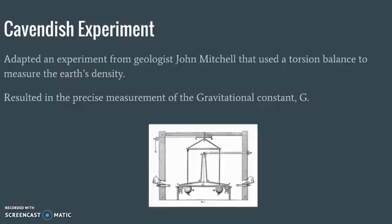Mitchell had been designing a torsion balance to measure the Earth's density. Much of the apparatus was already built and shipped to Cavendish. As a side effect of measuring Earth's density, Cavendish was actually able to measure the gravitational constant G to very high precision. G is equal to 6.67 × 10⁻¹¹ N·m²/kg², though there are actually many more decimal places than just 6.67.